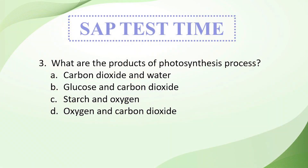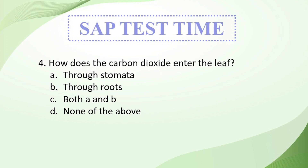Your third question: what are the products of the photosynthesis process? Products are whatever is produced by the end of photosynthesis. Option A: carbon dioxide and water; Option B: glucose and carbon dioxide; Option C: starch and oxygen; Option D: oxygen and carbon dioxide. Your fourth question: how does carbon dioxide enter the leaf? Option A: through stomata; Option B: through roots; Option C: both A and B; Option D: none of the above.